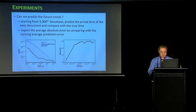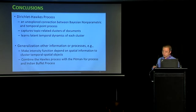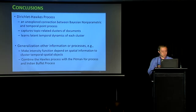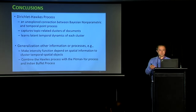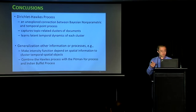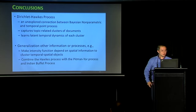To summarize, the Dirichlet-Hawkes process combines temporal point processes and Bayesian nonparametrics — a largely unexplored area — and integrates both temporal and content information in a principled way. There are many possible generalizations: incorporating spatial intensity for joint spatial-temporal topic modeling, or combining Hawkes processes with other Bayesian nonparametric approaches such as hierarchical topic models.